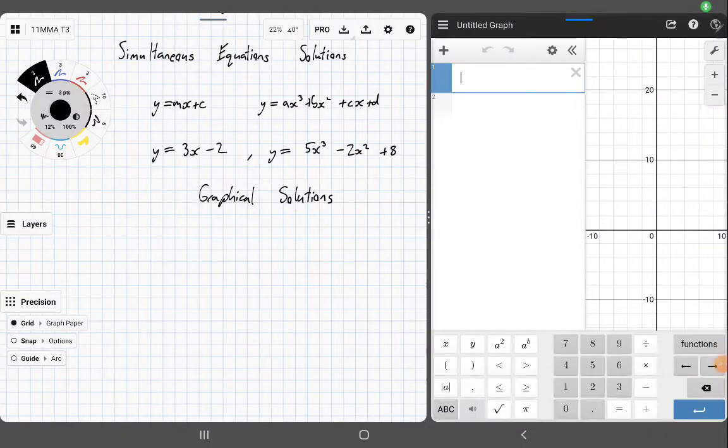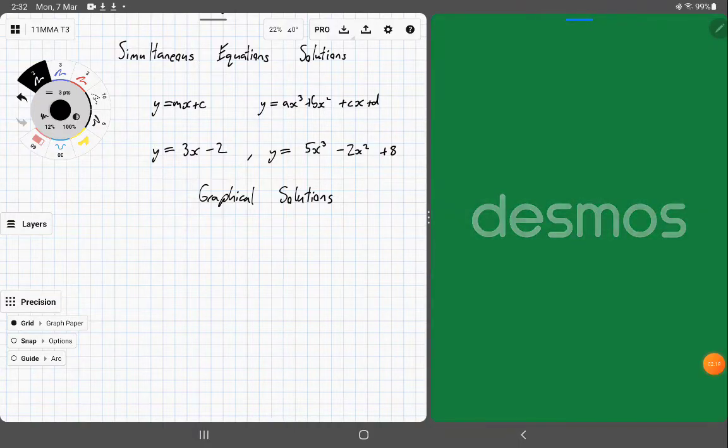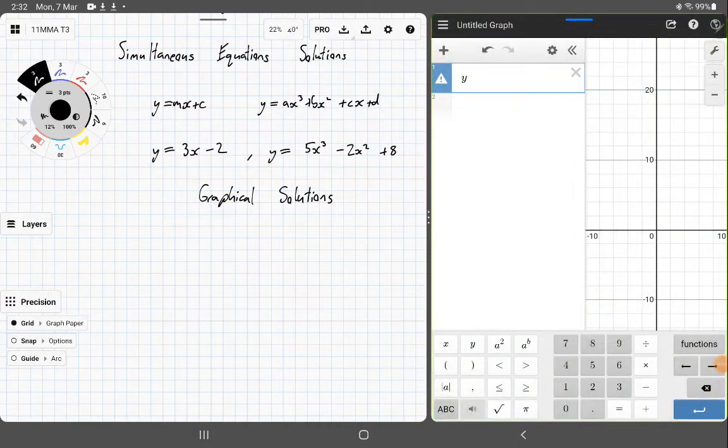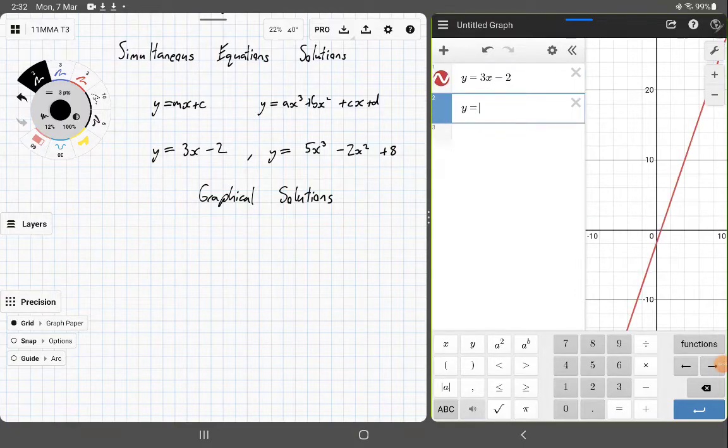Alrighty, so step one, let's just type it in the two equations we've got. Desmos is just restarting. So we're going to have y equals 3x minus 2 and y equals 5x to the 3 minus 2x squared plus 8.